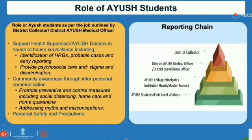The reporting chain includes that field level workers, after surveillance, will report to their college if they are students, or if they are field level workers, they can report to their master trainers or nodal officers who trained them. Thereafter, this will go to the district IUS officer or district level surveillance officer, whichever is appointed. They will then compile the information from all sources and send it to the district collector so that he can deploy it wherever need arises.